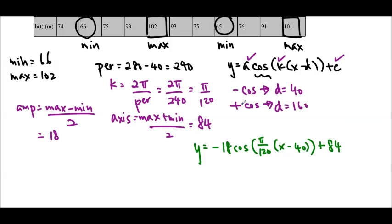And it's up to you which one you want to do. I'm going to actually write both since I've found them already. So y is equal to negative 18 cos, π over 120, x minus 40, plus 84. Or if I use positive cos, y is equal to 18 cos, π over 120, x minus 160, plus 84. So just like before, the amplitude stays the same, the k stays the same, the axis stays the same. It's just the phase shift and the function itself that changes.